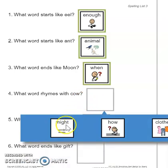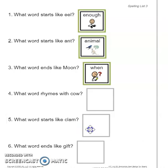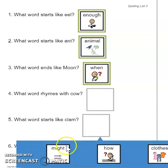The choices are: might, how, clothes — write or cut and paste your answer. Number five: What word starts like clam? Remember, when it says 'starts like,' we're talking about the sound at the beginning. Clam — another word that starts like clam is clip or clean. Which word starts like clam? Might, how, close — write or cut and paste your answer.